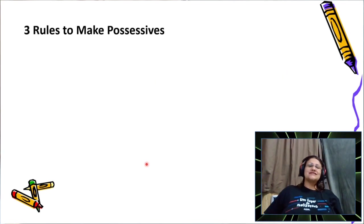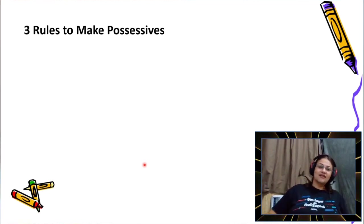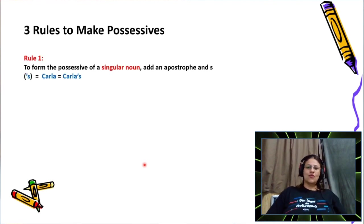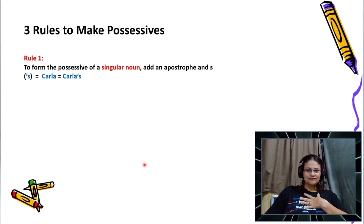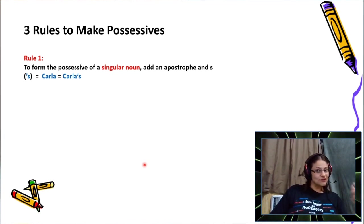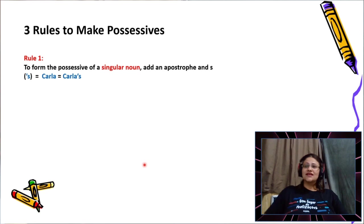Guys, I have three basic rules to make possessives. Rule number one: to form the possessive of a singular noun — for example, Carla, a dog, a teacher, a student, just one — we add at the end of the word an apostrophe and an S, like here: apostrophe and an S.